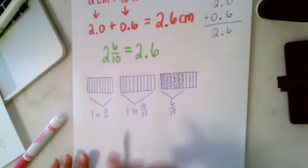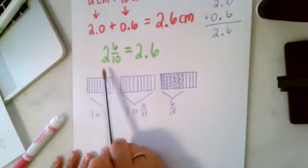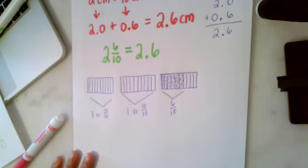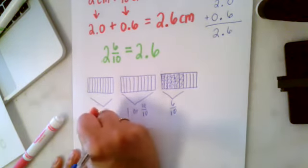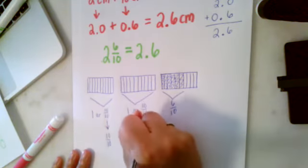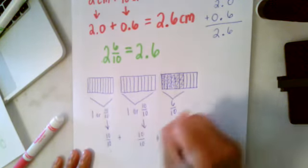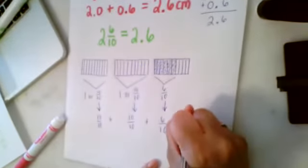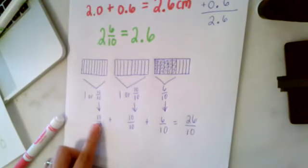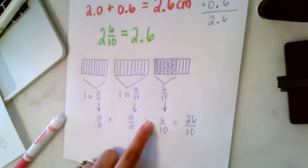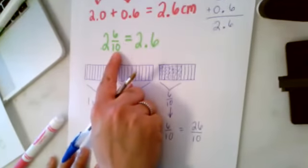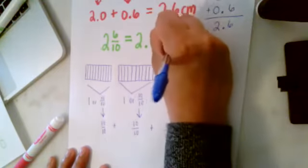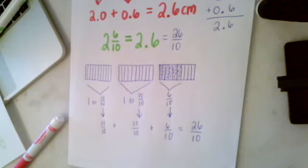So 2.6 or 2 and 6 tenths as an area model is 2 wholes and 6 tenths shaded. That could also be, if we take the 10 tenths plus the 10 tenths plus the 6 tenths, it can also be a total of 26 tenths because 10 plus 10 is 20 plus 6 is 26 tenths. So 2 and 6 tenths equals 2.6, which is also equal to 26 tenths.